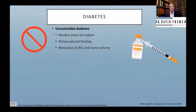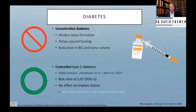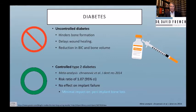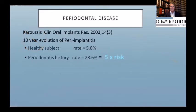What about diabetes? Uncontrolled diabetes — first of all, don't do implants; that's an ASA 4. Uncontrolled diabetes reduces bone volume and impairs wound healing. But a controlled diabetic? Looking at a risk ratio of 1.07, it's essentially no different. There's very small impact on peri-implant bone loss. Diabetes is important in recognizing how well it's controlled, but you can go ahead and treat controlled diabetics.